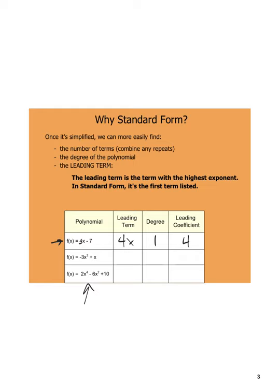Looking at the second one, you can see the leading term is the x squared term — so that's negative 3x squared, which means it's a second degree with a leading coefficient of negative 3. And then the third one is also in standard form. The leading term there is 2x to the fourth, so its degree is 4 and its leading coefficient is 2.